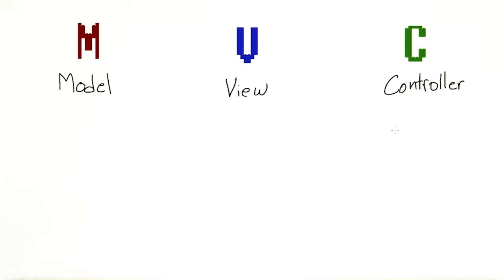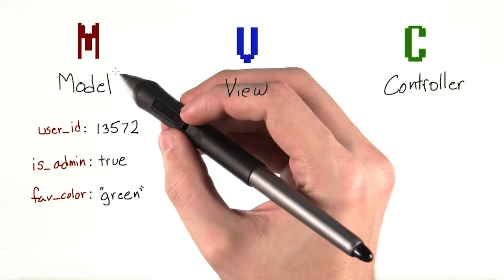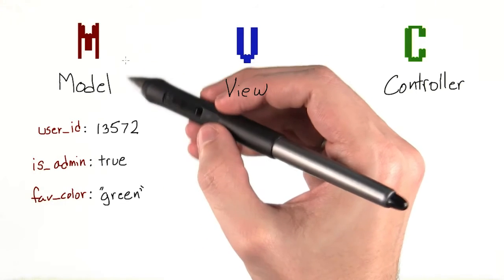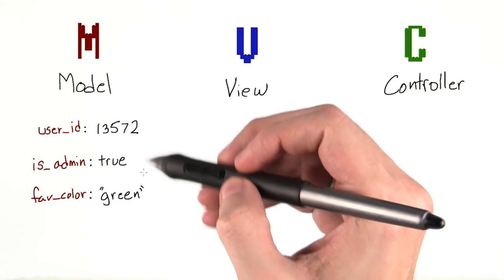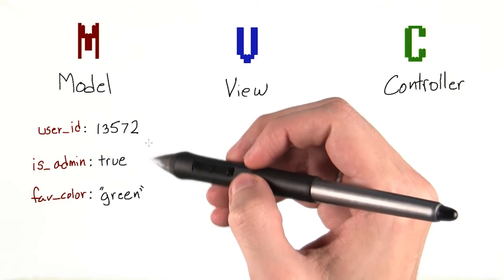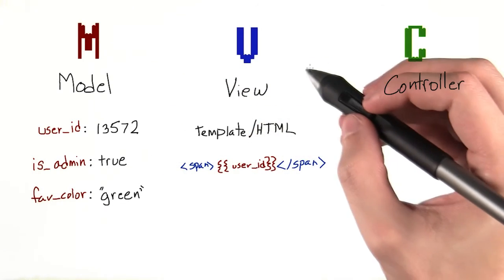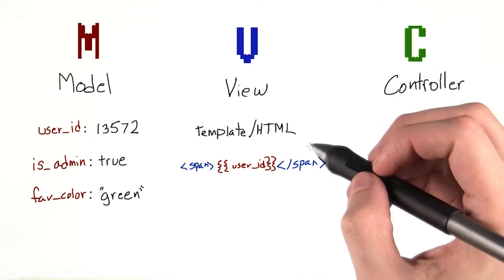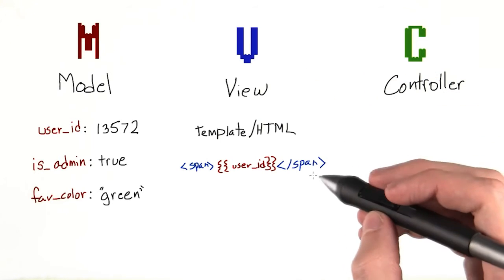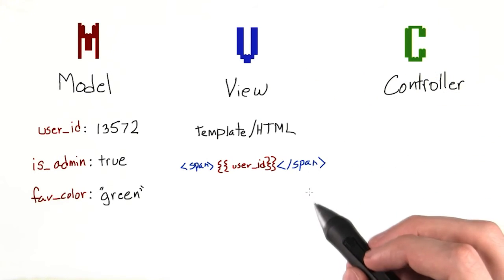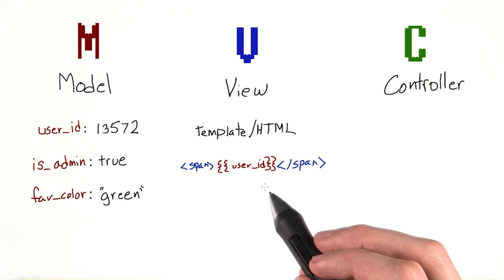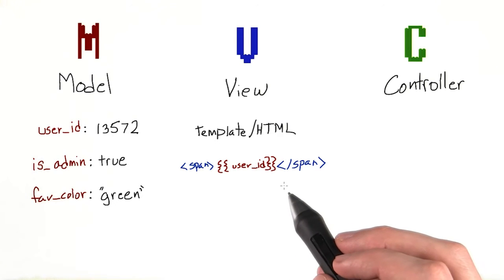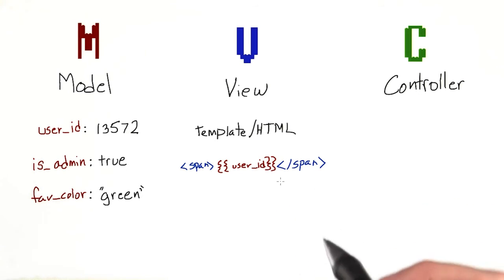Many frameworks provide a means for creating and managing models, views, and controllers. Model refers to a data model — it's everything from the user information to any data that you might want to see. View is what users see and interact with. For a website, the view is essentially any HTML, CSS, and JavaScript that controls how a page looks and behaves.